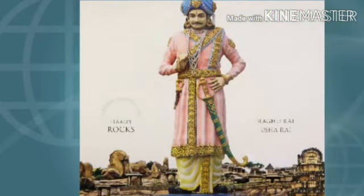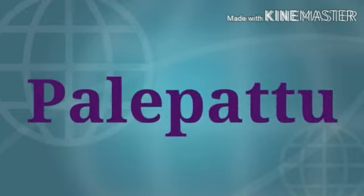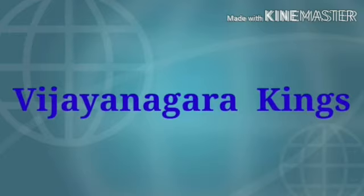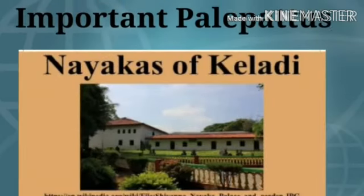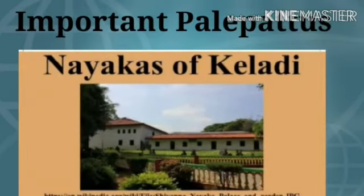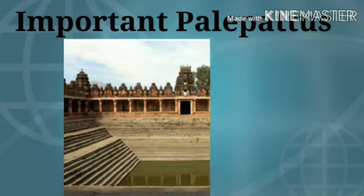During the rule of the Vijayanagara empire, Palegara were appointed to administer different regions. These regions were called Palepattu. Palegara were leaders who reported to the Vijayanagara kings and had to submit tax and gifts to the king. Some of the important Palepattus were Keladi, Chitradurga, Yelanka and Chikaballapura.